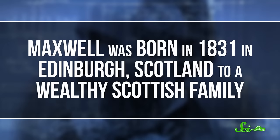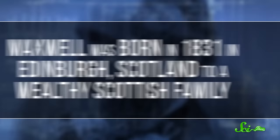Maxwell was born in 1831 in Edinburgh, Scotland, to a wealthy Scottish family. He published his first academic paper, a new method of mechanically plotting mathematical curves using a piece of twine, at the age of 14.